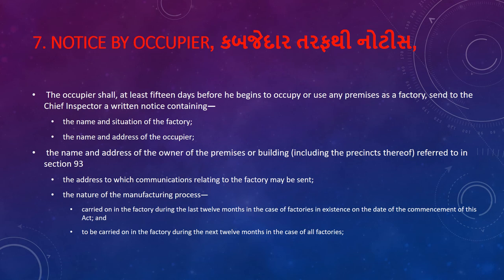Section 7 covers notice by occupier. If an occupier intends to use any premises as a factory, a notice must be submitted. The notice must include the name of the factory, the name of the occupier, the address, the nature of the manufacturing process, and the number of workers employed.